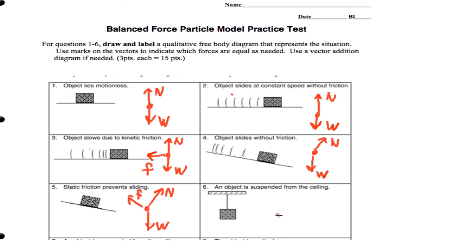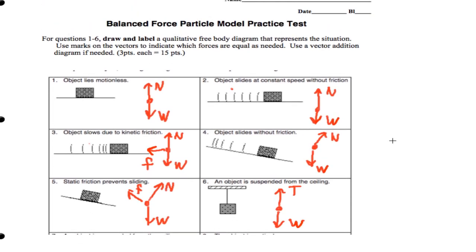Finally, we have an object suspended from the ceiling. So, we have a tension going up. We have a weight force going down. And that's it for page one of the practice exam.